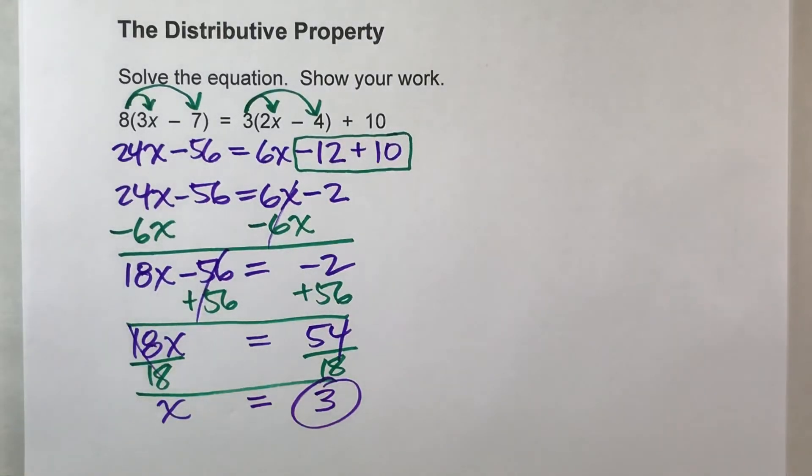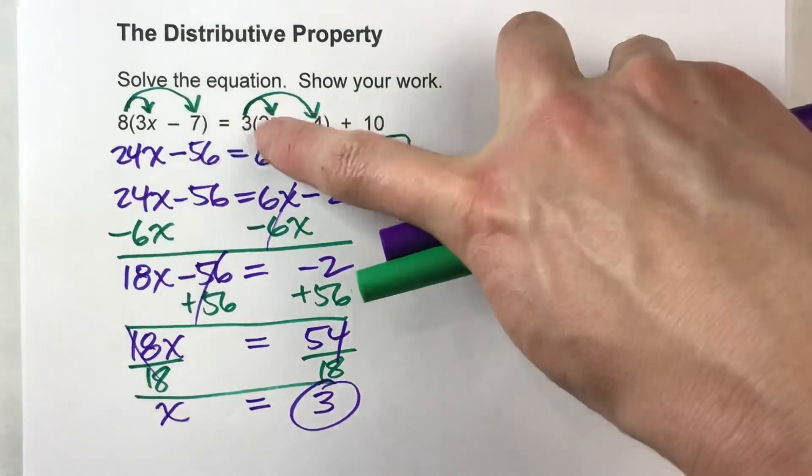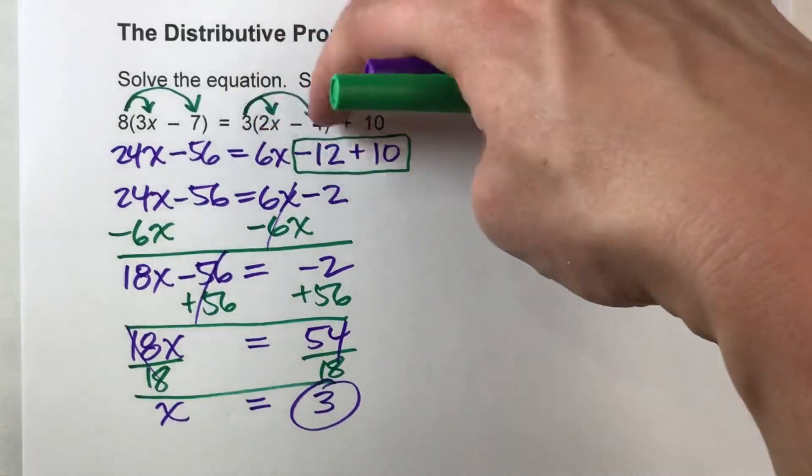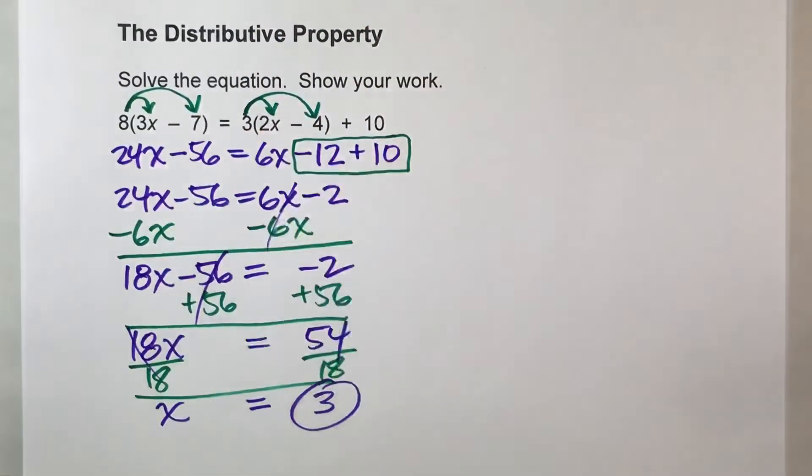And that is the solution to my equation. So notice, the new step here was the distributive property. When you have a number times a bunch of things in parentheses, but just remember, you've got to multiply every single thing in the parentheses by that number on the outside.